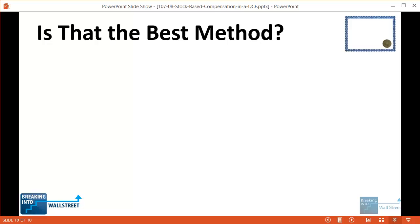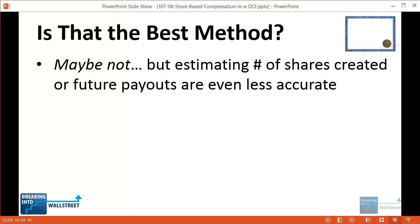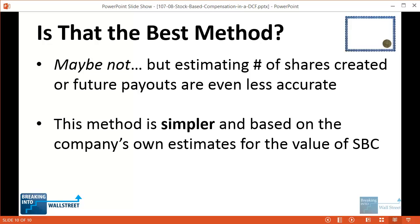There are some issues with this method — for example, the value in the future might be higher if the share price increases or SBC terms change — but other methods such as estimating the number of shares are even less precise. This method is simpler and based on the company's own estimates for the value of stock-based compensation, usually determined with the Black-Scholes method. Since it's simpler and based on real historical numbers, it's the better approach. Going forward you could project it as a percent of revenue, and it will always reduce operating income in your model.